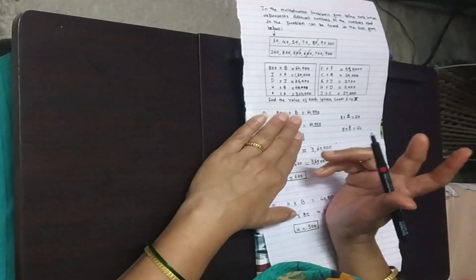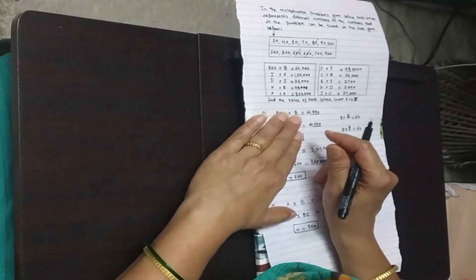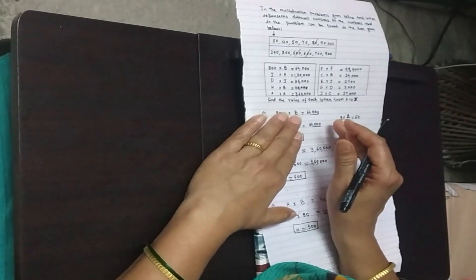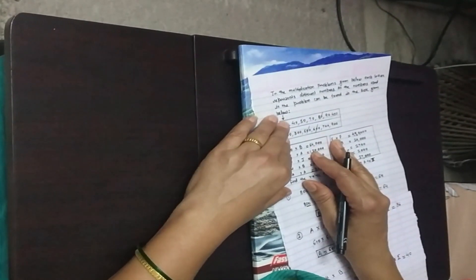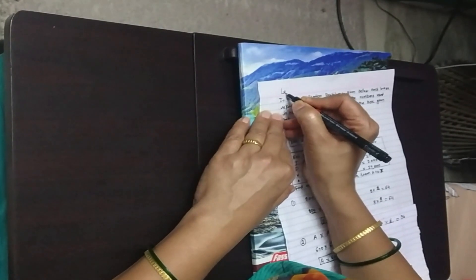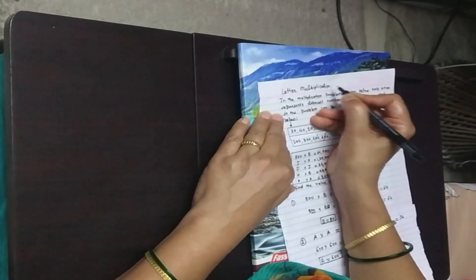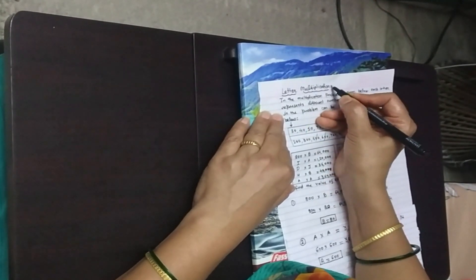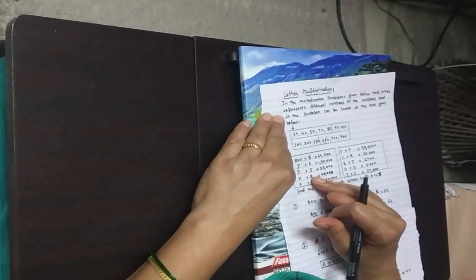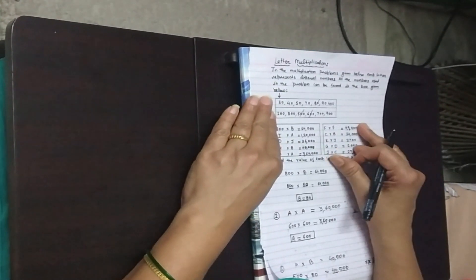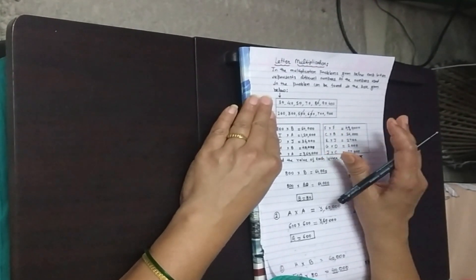There are 2 activities to assess for the first evaluation, each for 10 marks. This is the first activity, so it is compulsory to do this and send it to me within 2 to 3 days. The name of the activity is letter multiplication — in which letters are multiplied and we find out their values. Please solve this activity and submit it through Campus Care — make a PDF of it and send it.